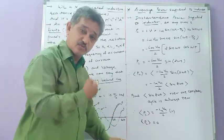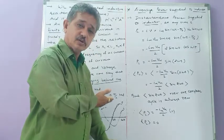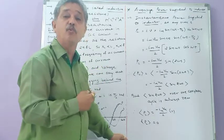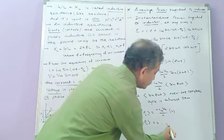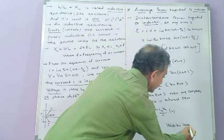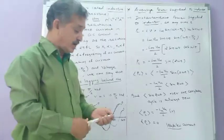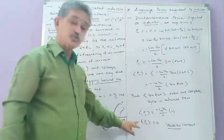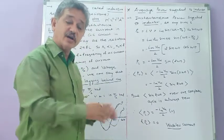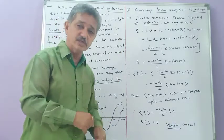Therefore, the average power supplied to an inductor over one complete cycle is 0. This means the average power consumed by the inductor is 0. Even though the average power is zero, current is still flowing — this current is called wattless current. The current flows in the circuit but carries no net power. How this current flow is maintained in an inductor even with zero average power will be seen later.